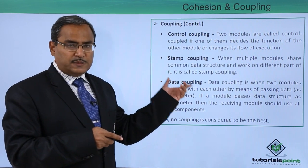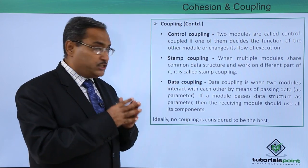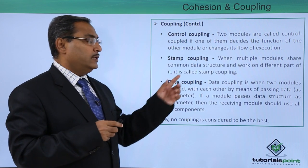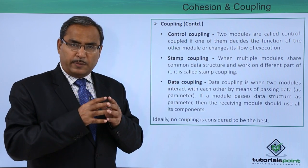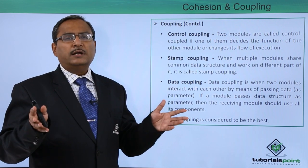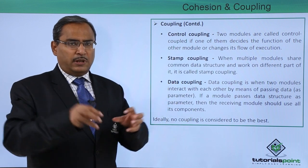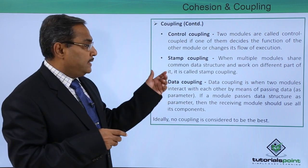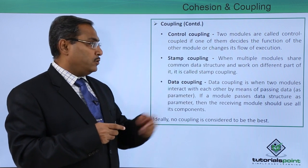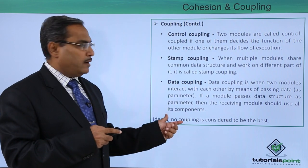The next level is stamp coupling. When multiple modules share a common data structure and work on different parts of it, it is called stamp coupling. For example, multiple modules working on the same data structure — say a binary tree — but each working on a different part of it — that is stamp coupling. The last level is data coupling: when two modules interact with each other by means of passing data as parameters.